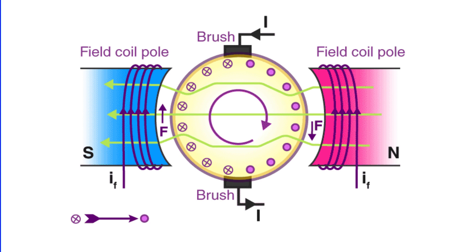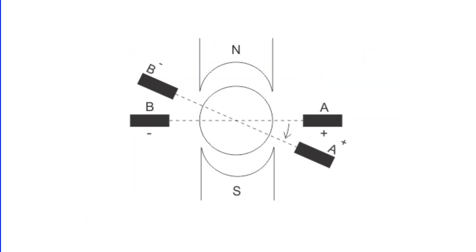To mitigate these effects and enhance performance, specific adjustments and methods are implemented. As we delve deeper into the intricacies of armature reaction, a seemingly straightforward solution emerges: shifting the brushes.